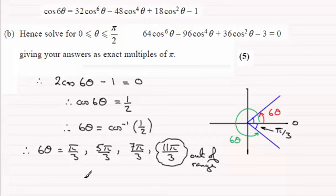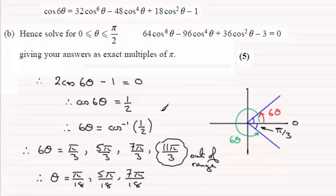So dividing through by 6 leaves us with theta equals pi upon 18, and then 5 pi upon 18, and 7 pi upon 18, all between 0 and pi upon 2.